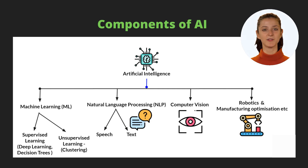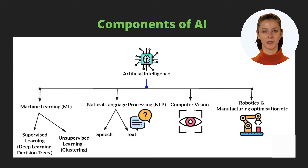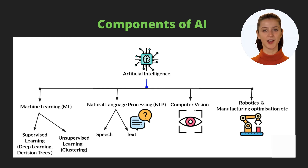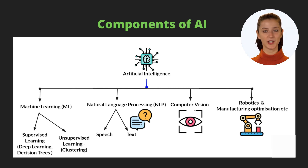The bigger umbrella is artificial intelligence, also popularly known as AI. Under it, we have sub-branches like machine learning (ML), natural language processing (NLP), computer vision (CV), as well as AI applications in robotics and other areas like optimizing manufacturing pipelines. Under machine learning, you have two popular sub-branches: supervised learning and unsupervised learning. Algorithms like deep learning, decision trees, and support vector machines fall under supervised learning. Under unsupervised learning, the popular type of algorithms used are clustering algorithms.